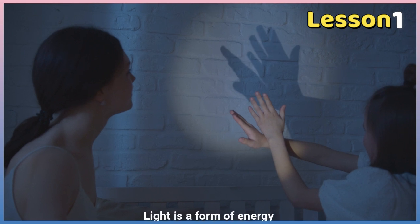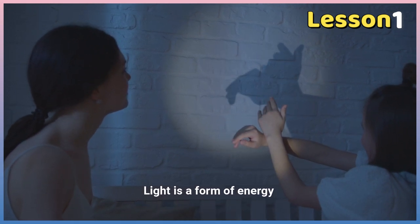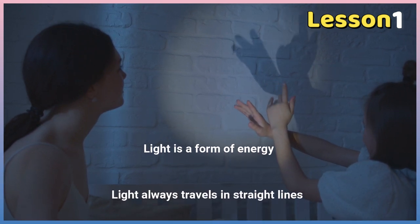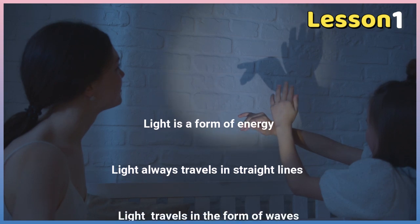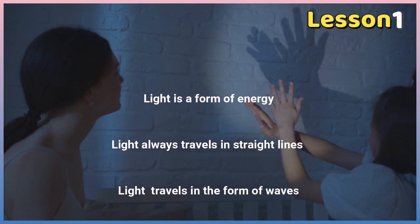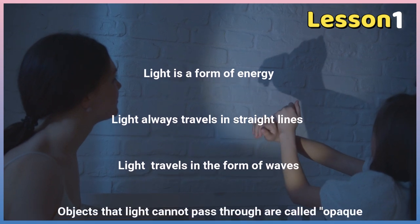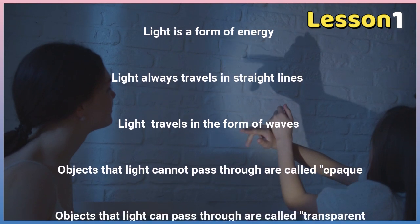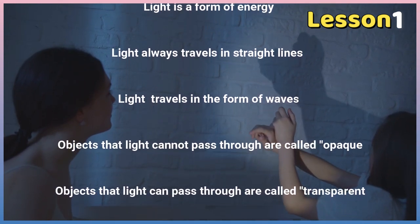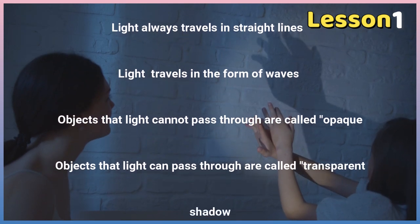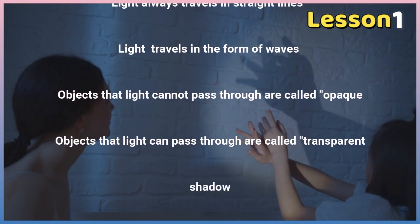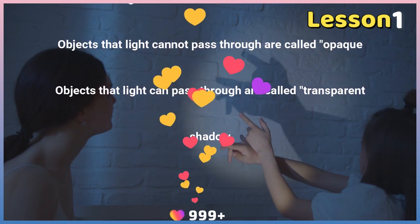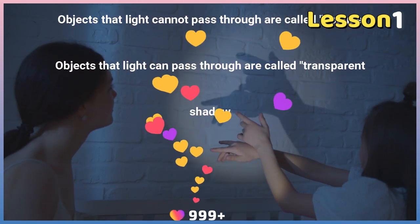Now repeat after me: Light is a form of energy. Light always travels in straight lines. Light travels in the form of waves. Objects that light cannot pass through are called opaque. Objects that light can pass through are called transparent. Shadow.